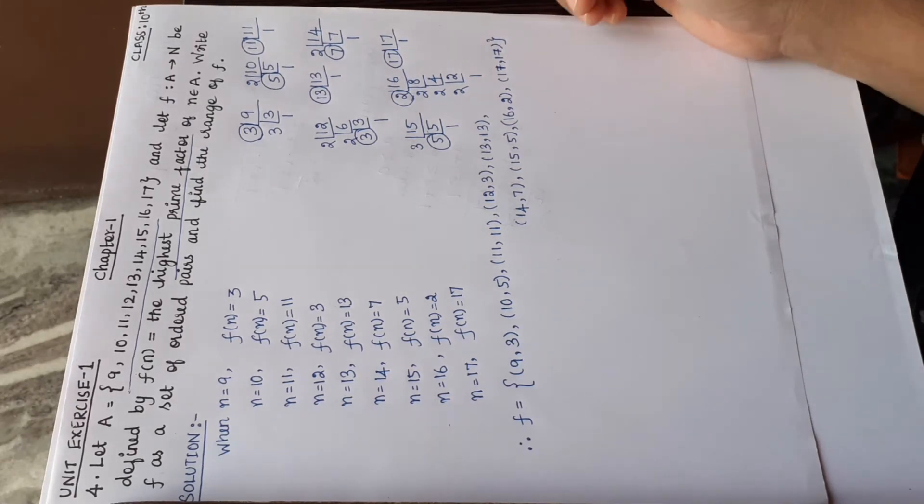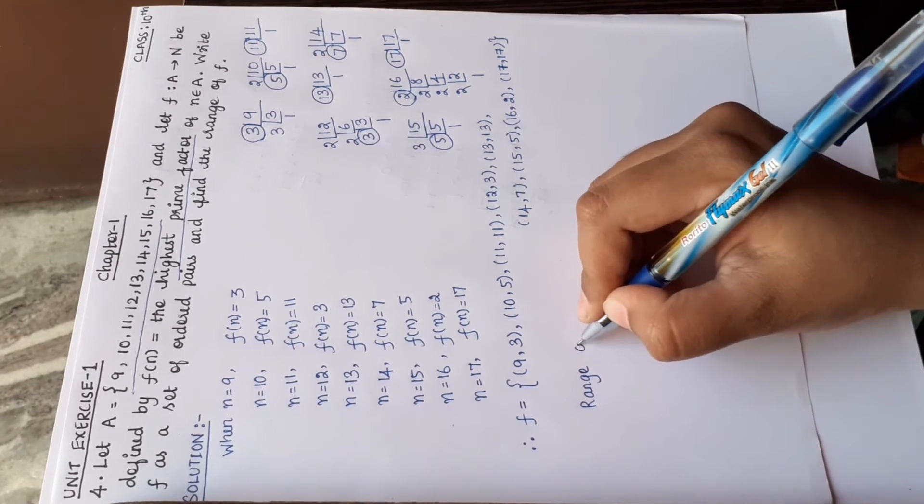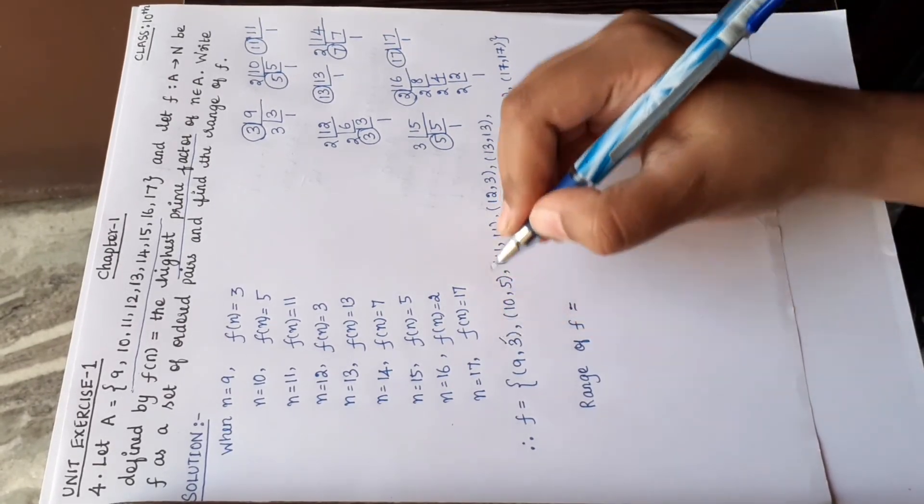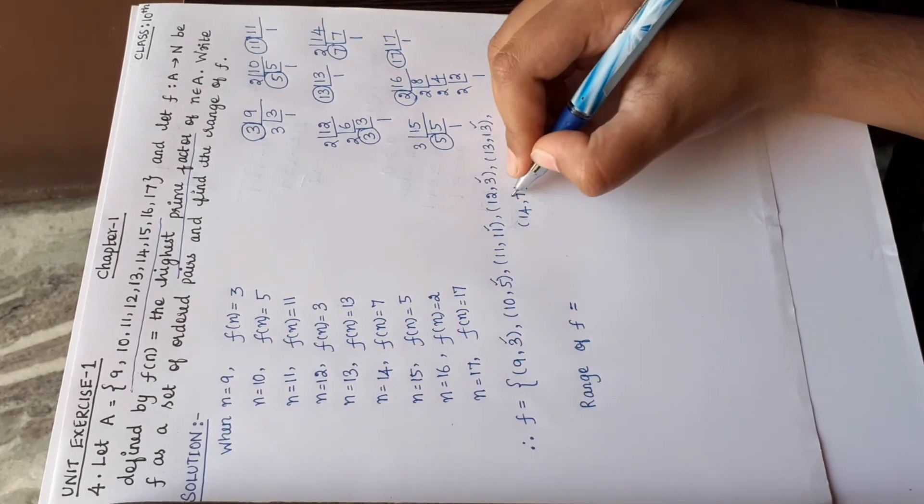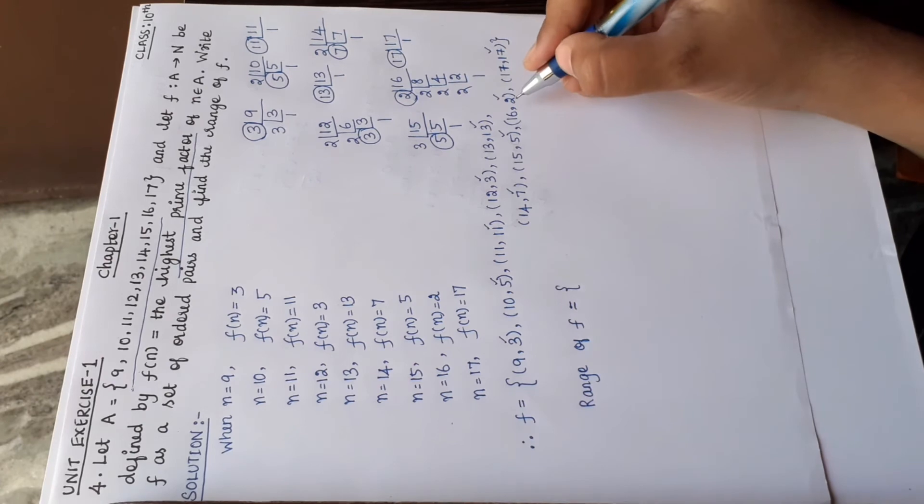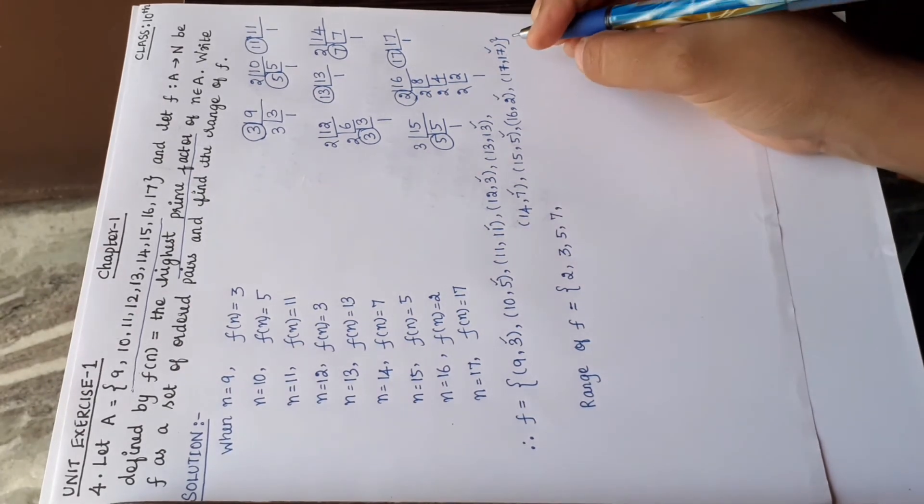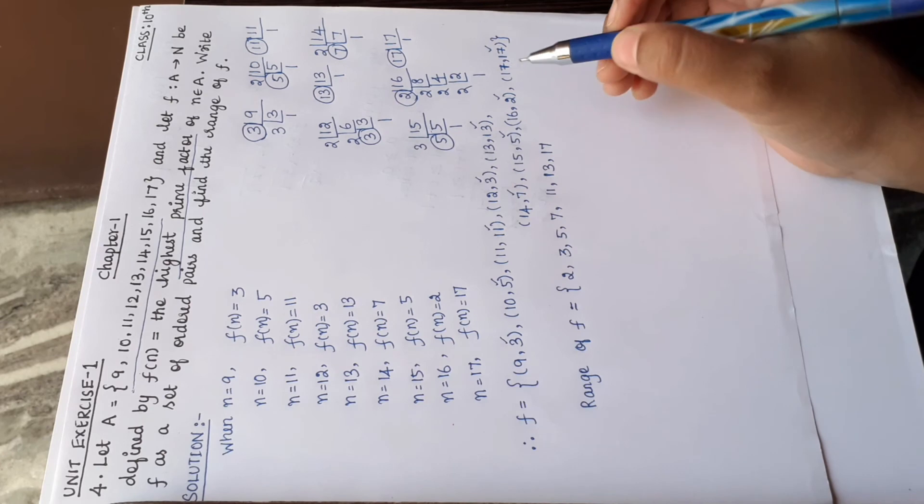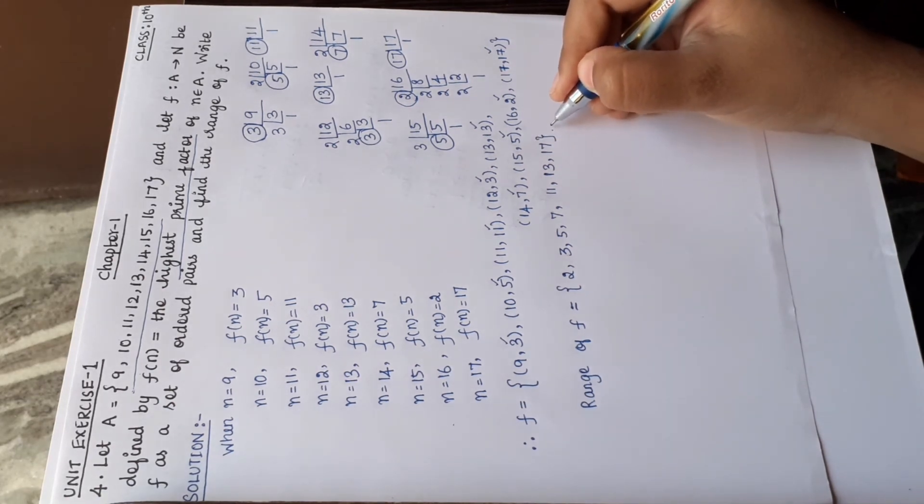Next, find the range of f. So range is the y values. In the ordered pairs, the second set of values gives us the range. So from the ordered pairs, we have: first 2, then 3, after that 5, 5, 7, 7, 11, then 13, and then 17. Since 5 appears twice, we write it once. So this is the range of f: {2, 3, 5, 7, 11, 13, 17}. That is all.